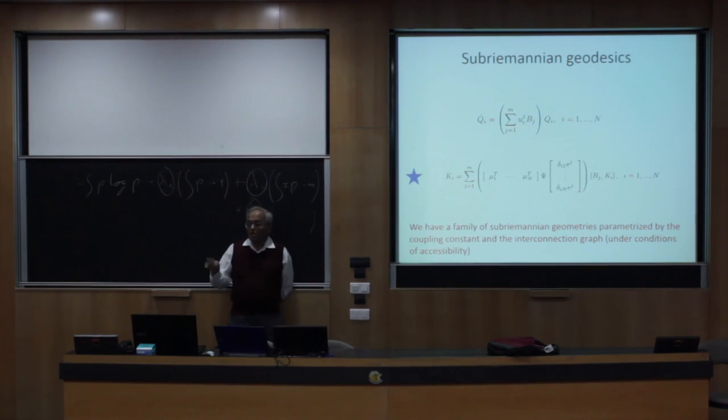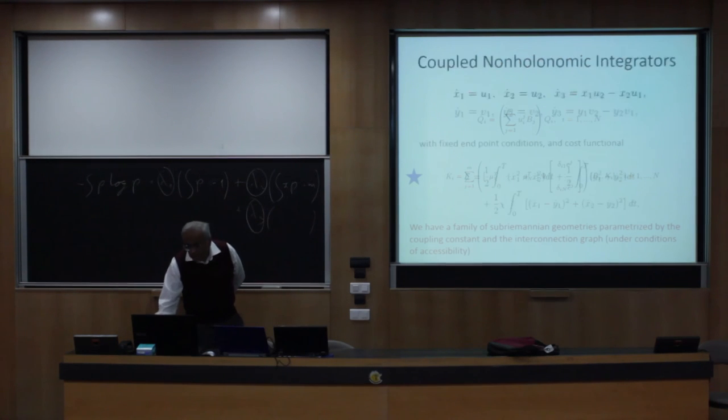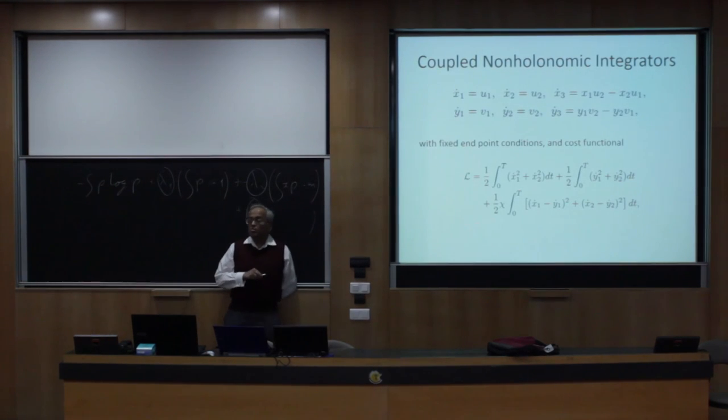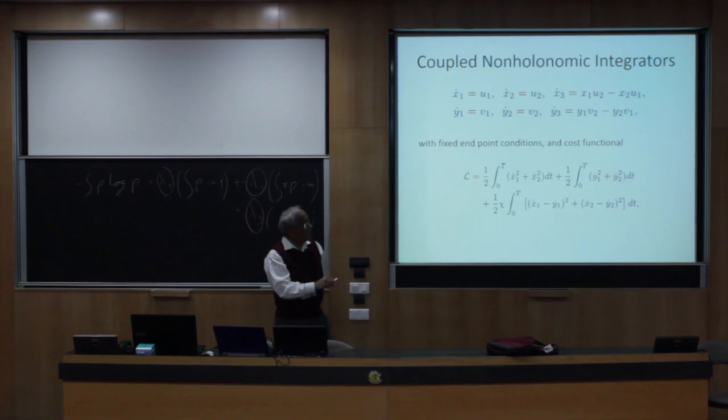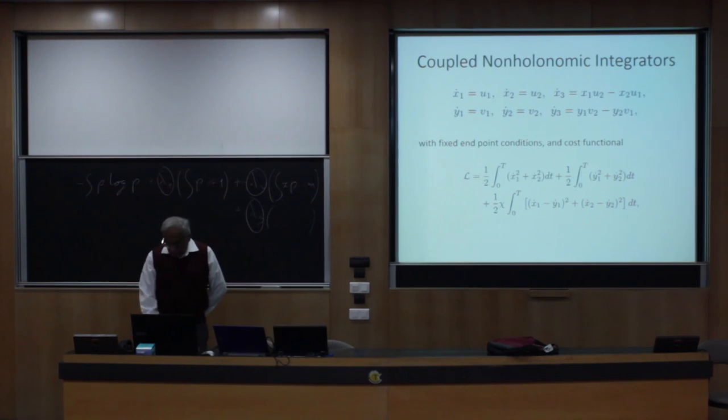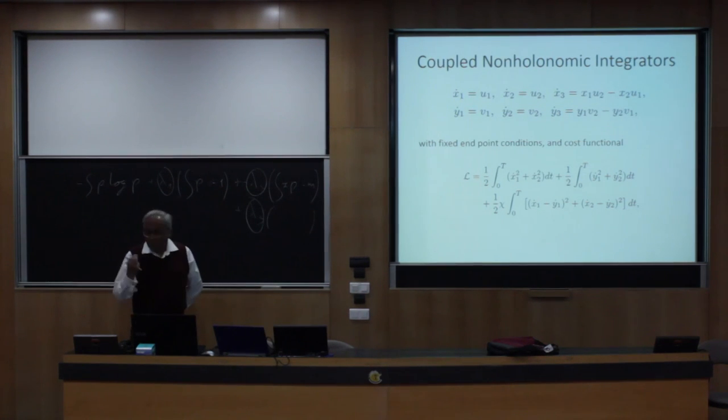Why is it coupled? Because the cost function now has this chi coupling. So model problem of this type on the Heisenberg group, if you have n equal to 2, two copies of the Heisenberg group. The standard sub-Riemannian example is this so-called non-holonomic integrator goes back to Brockett. These are two controls in a three-dimensional system. The third variable generates area or rectification. Another copy of the same thing, and you have coupled them in this way. The sub-Riemannian geometry of this is very interesting. There is no interesting graph aspect because there are only two particles, but there is still a coupling constant chi.